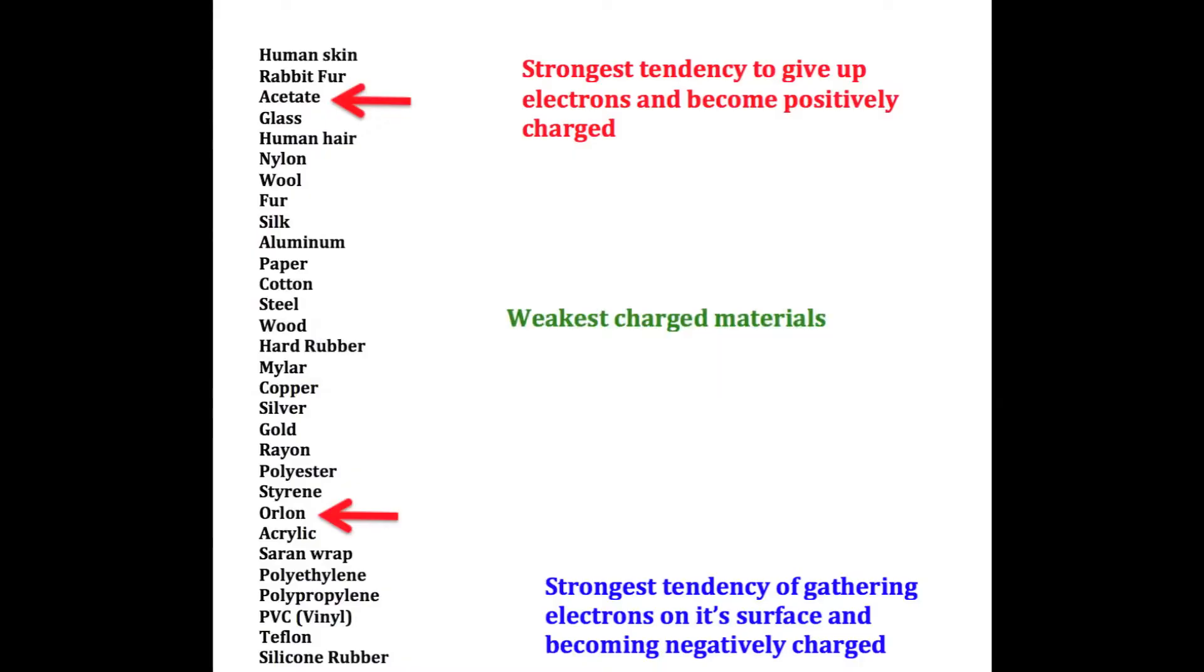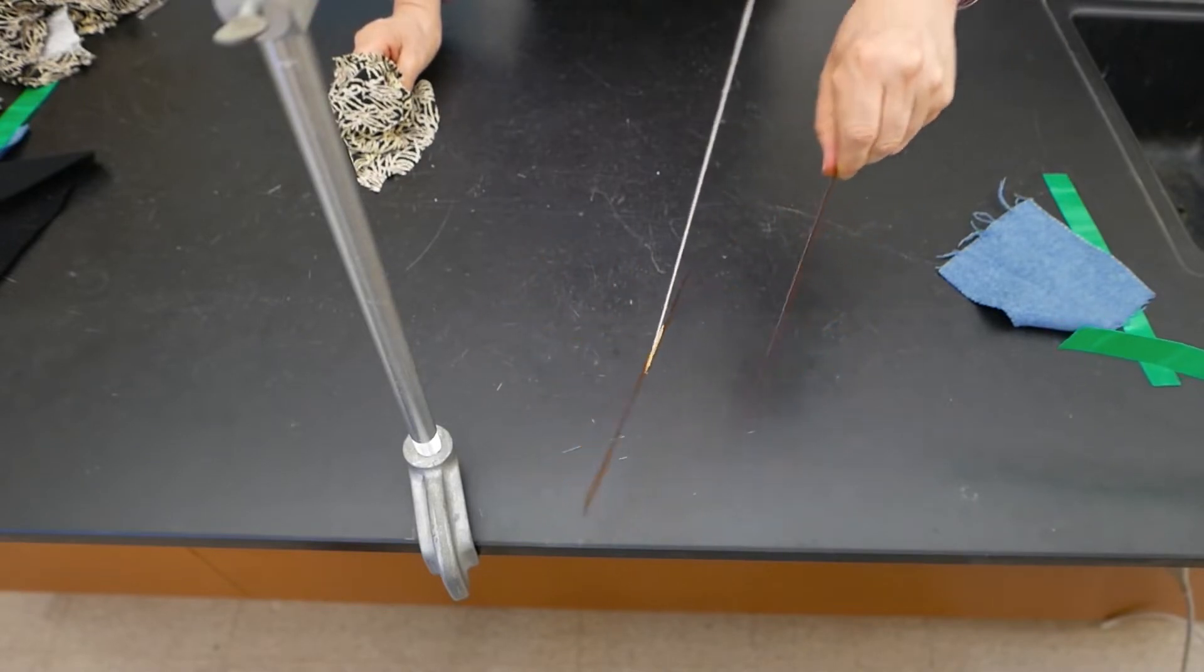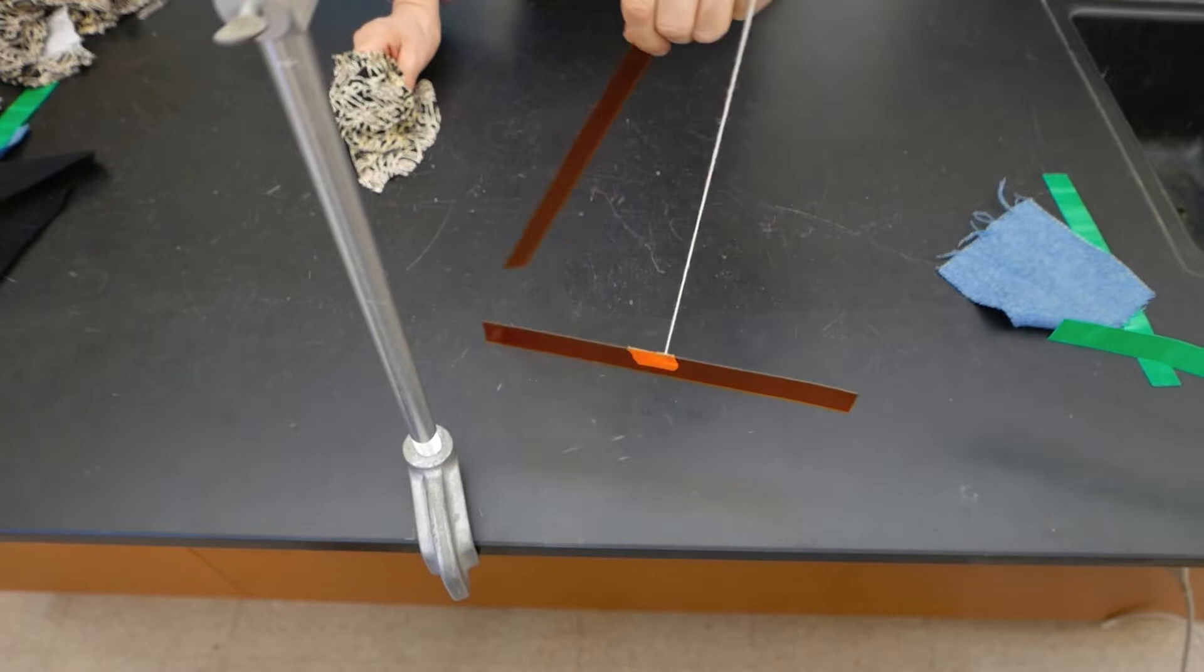Now, let's try it again. In this case, I'm going to use the acetate strips and rub them with the wool. And as I get it near it, once again, we see that it's pushing it away also.